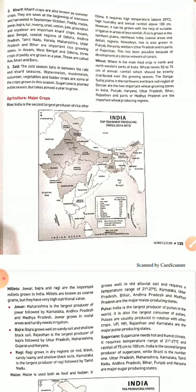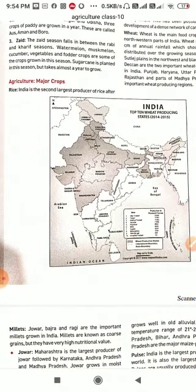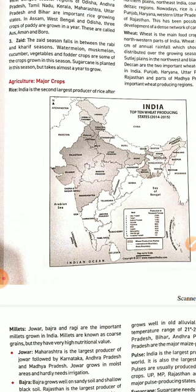Children, now we will understand which major crops we can grow in our fields. The first major food crop is rice (chawal). India is the second largest producer of rice after China.